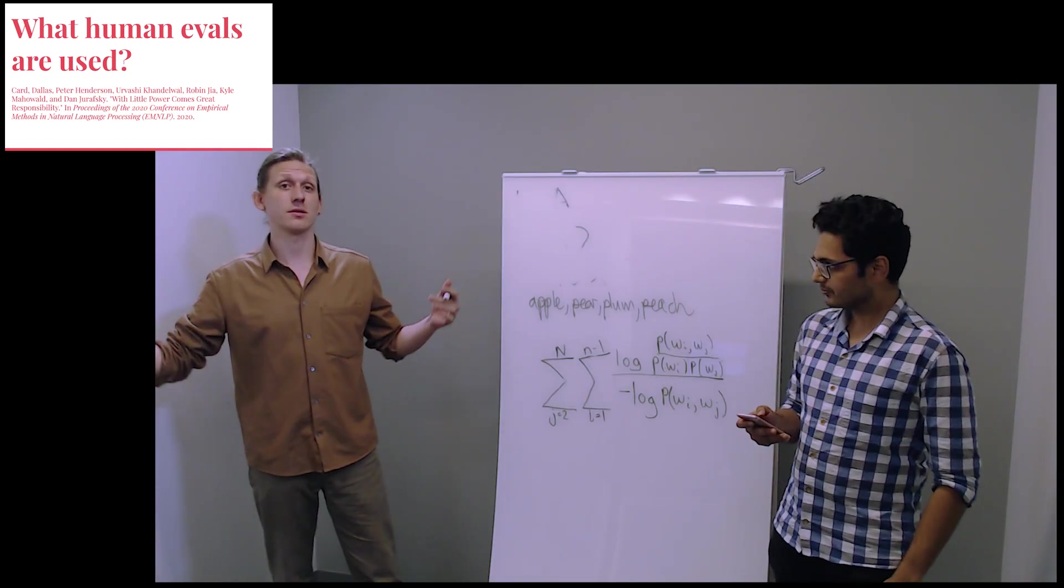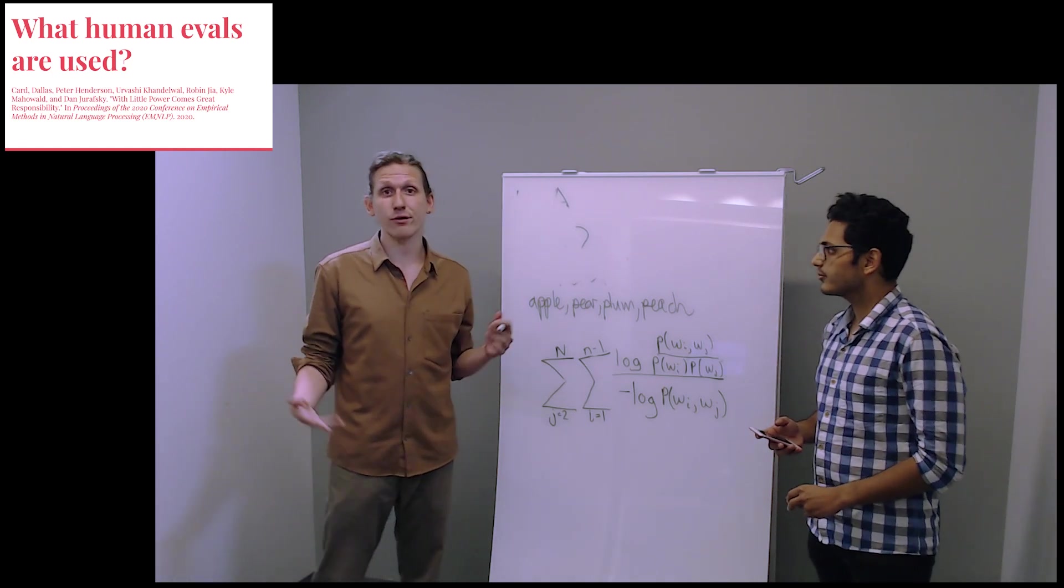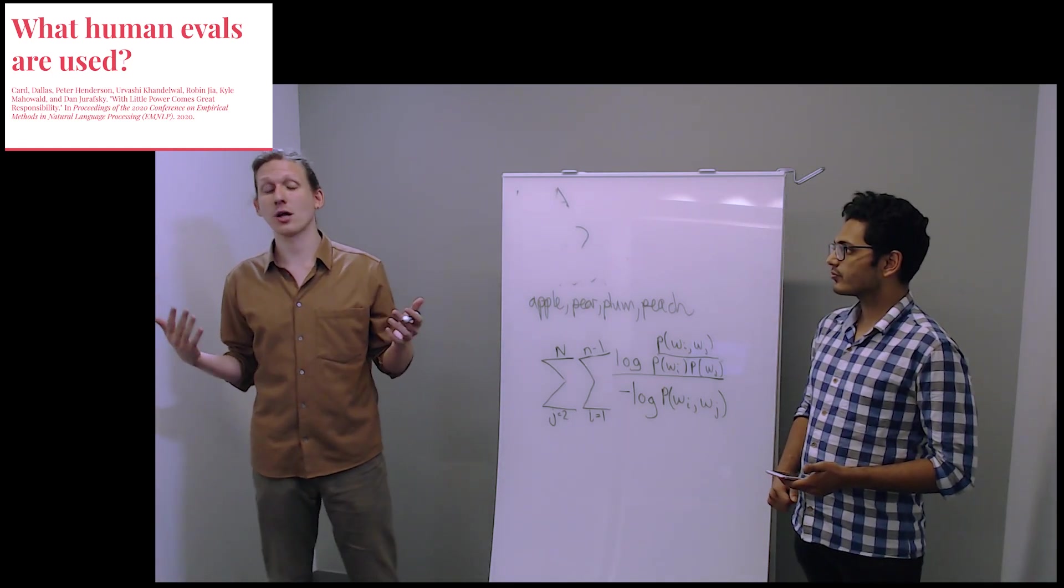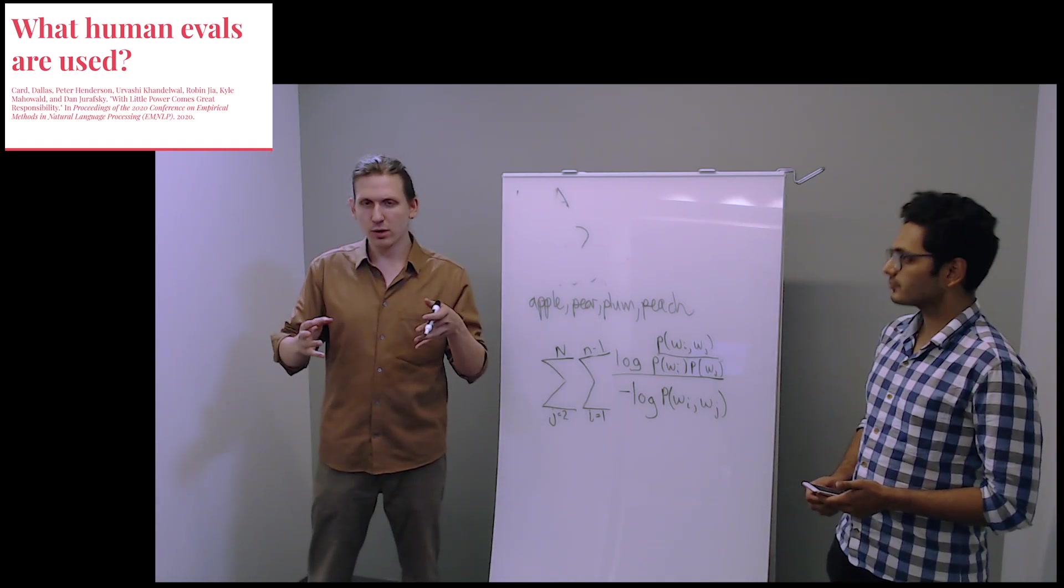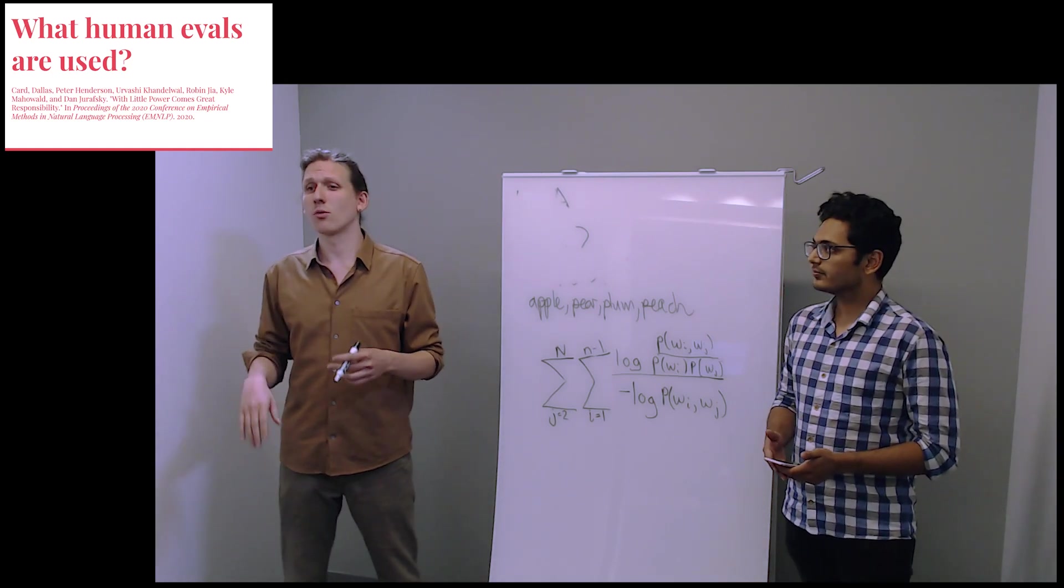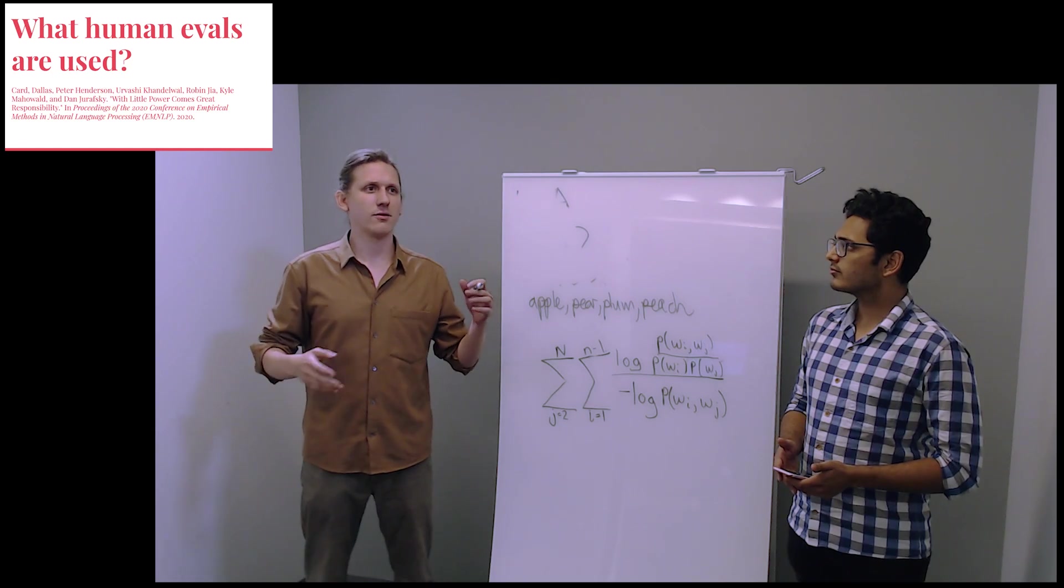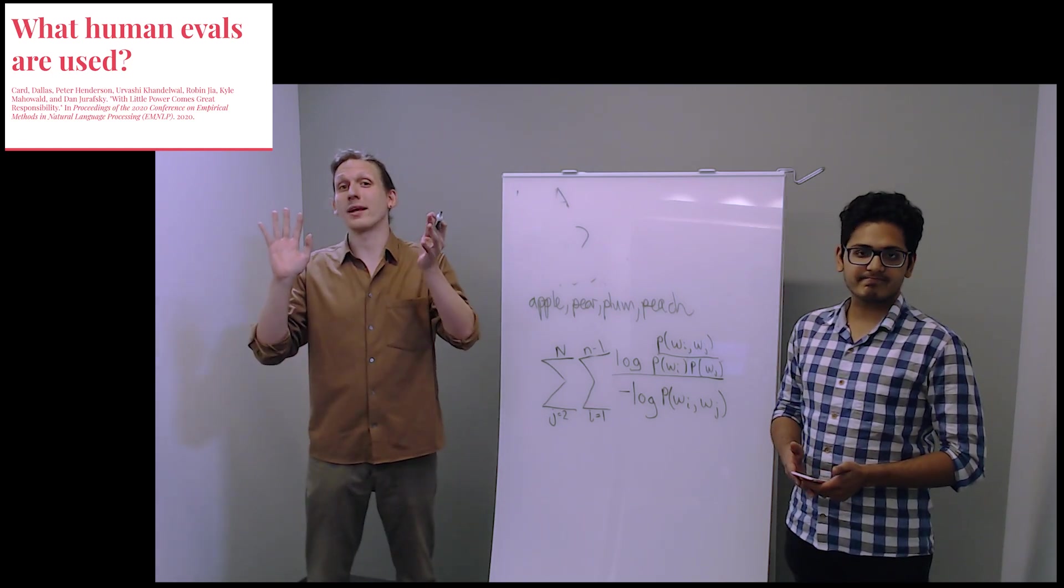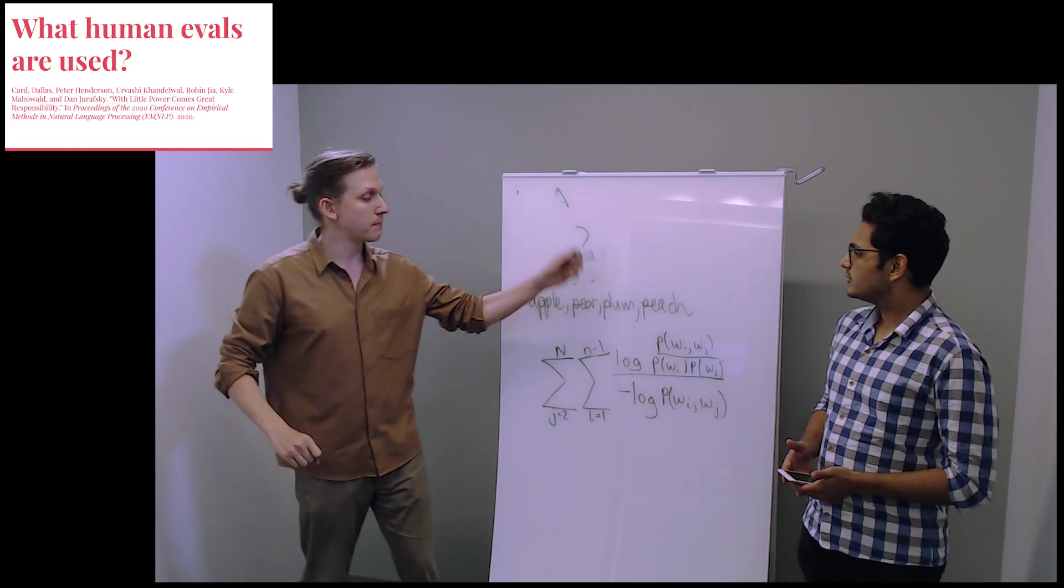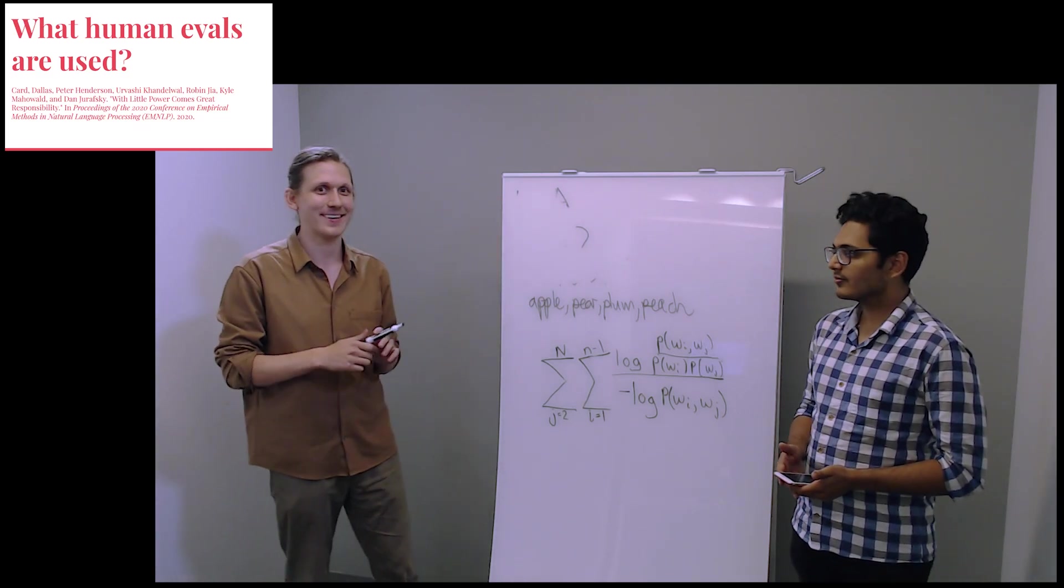What are these human evaluations? The first task is a simple Likert scale. We ask people to rate the words in each topic as either not related, somewhat related, or very related. The words thumb, crispy, alphabet, and nuance are all not related. But apple, pear, plum, peach, those are all very related.